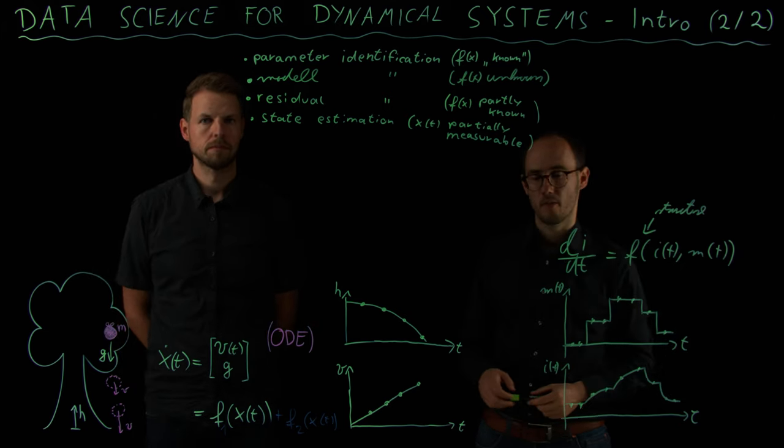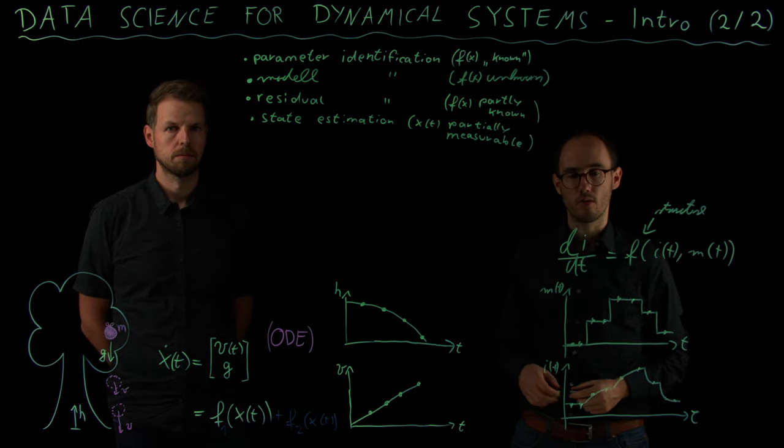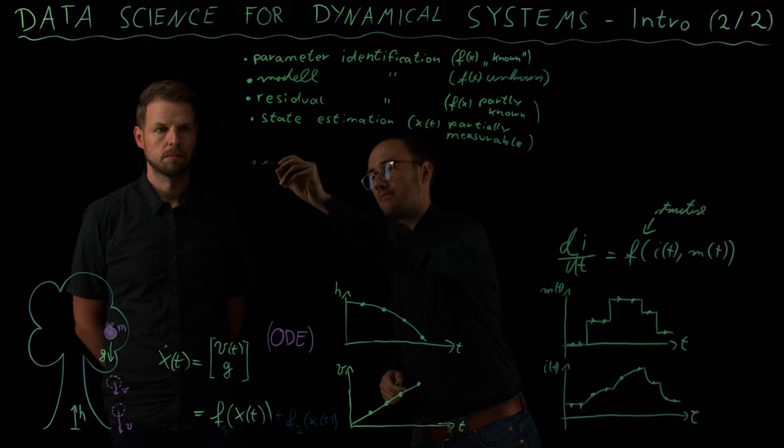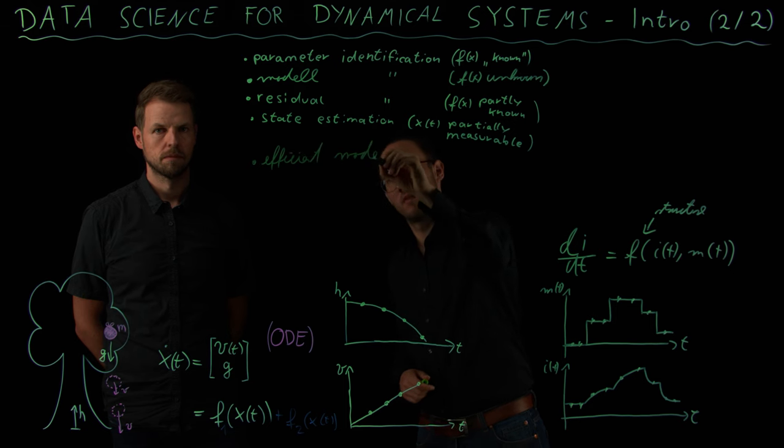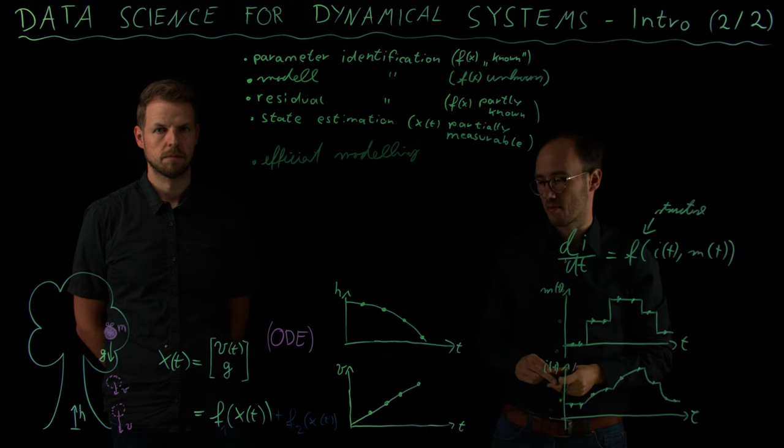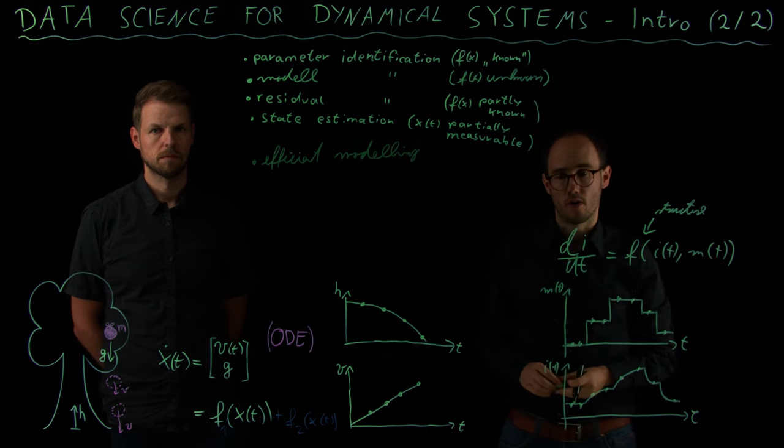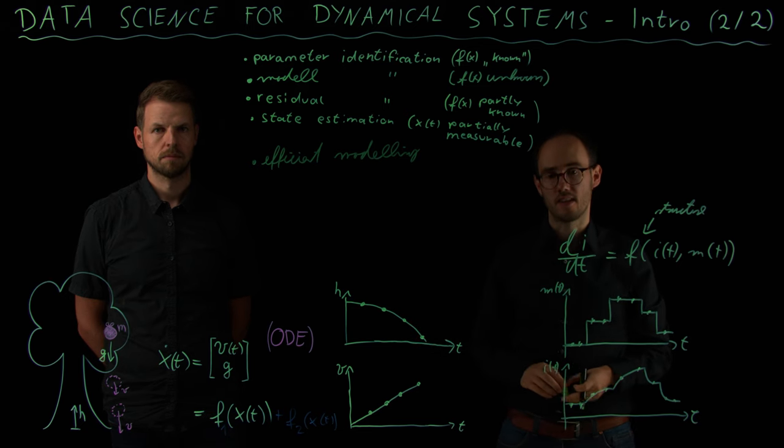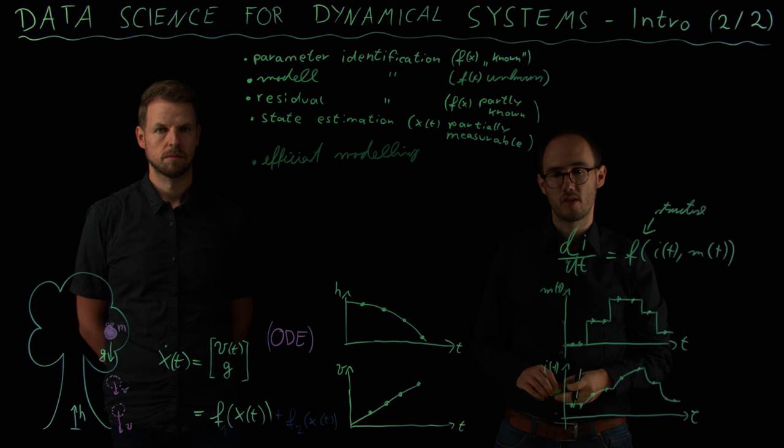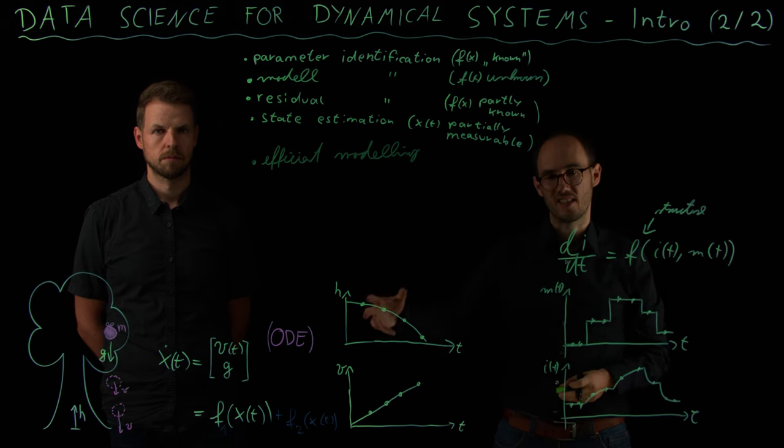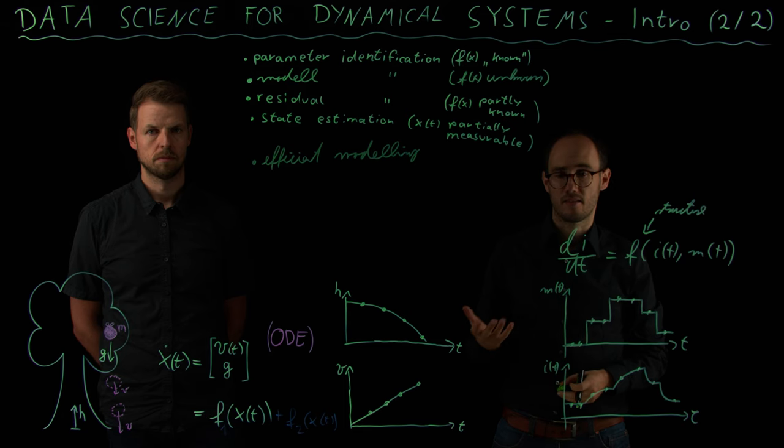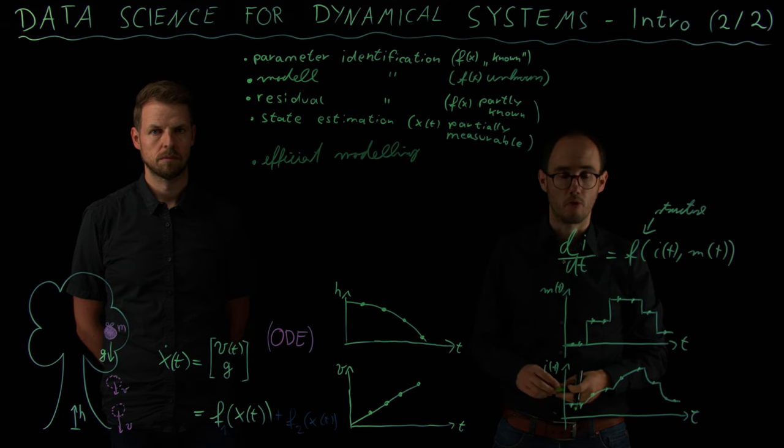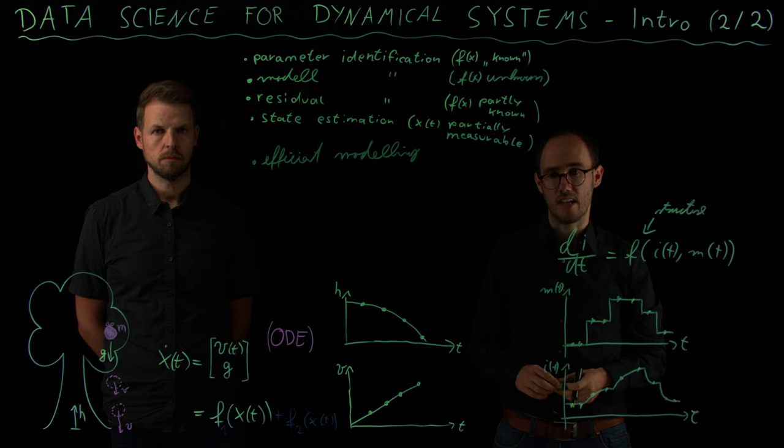Last but not least, we will also consider data in order to do efficient modeling. Why is that important? So here in our examples, we had very low order models where we had just like two states. And as we will see in one of the following up lecture series, in order to calculate the state response using analytical and numerical methods for such low order models, that can be done numerically very easily.